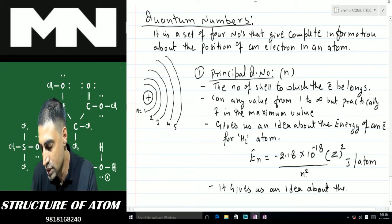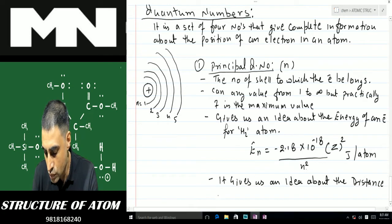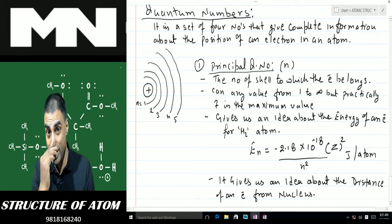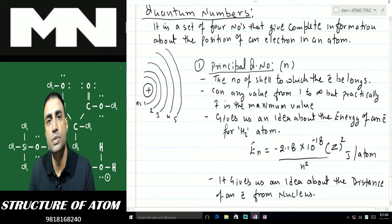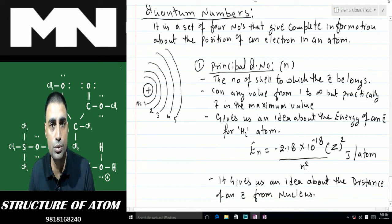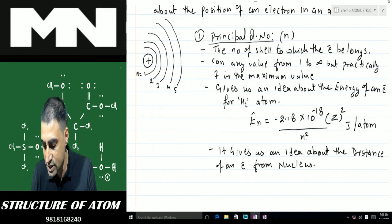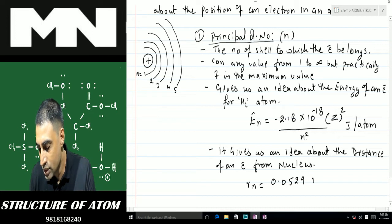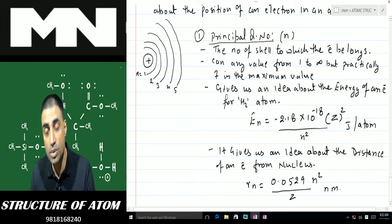The principal quantum number also gives us an idea about the distance of an electron from the nucleus. An electron with a higher value of n is farther from the nucleus, while one with a lesser value is closer. For hydrogen atom, the Bohr radius is calculated as: rn = 0.0529 × (n²/Z) nanometers, where rn is the radius of the nth shell.